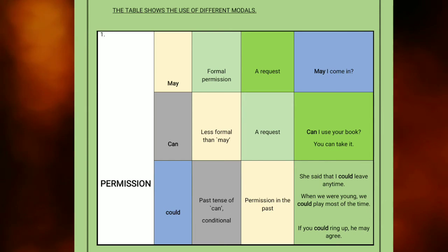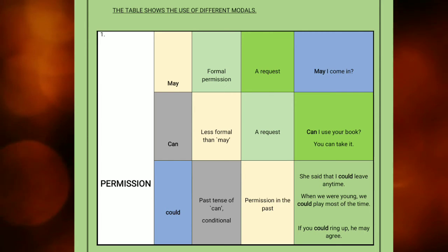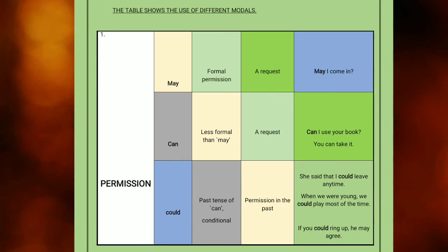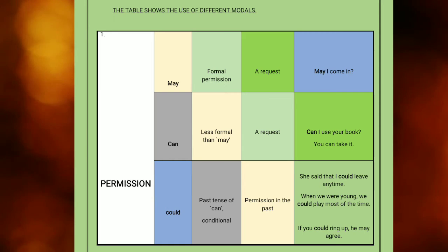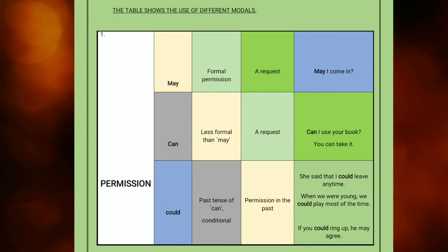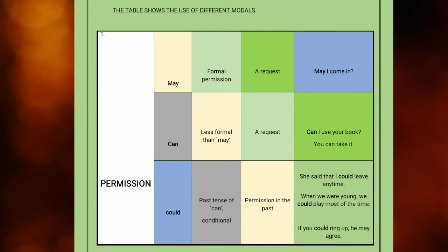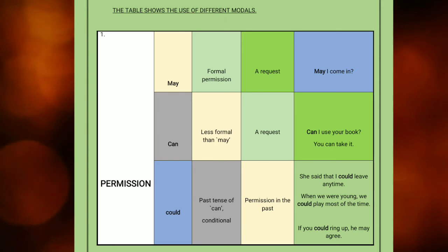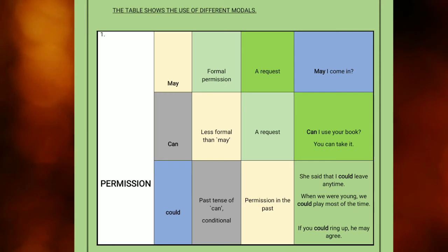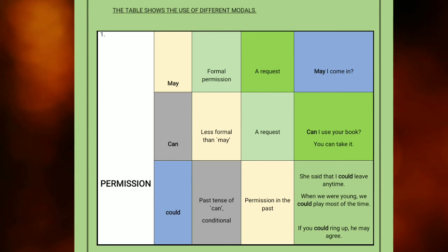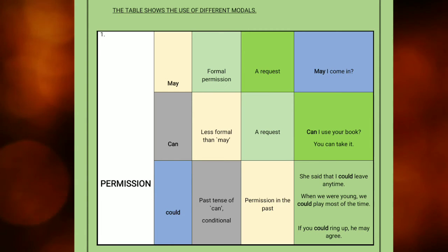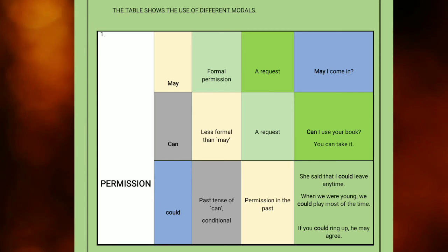What is permission? Permission is an approval to do something. In this table you can see three different modals used in asking permission: may, can, and could. May is used for formal permission — when you are making a request formally. An example is: 'May I come in?' Can is less formal than may and is used in making a request between friends or someone you are familiar with.